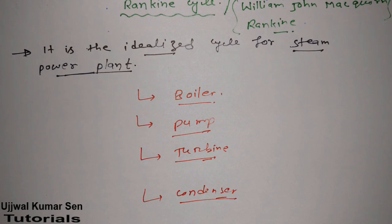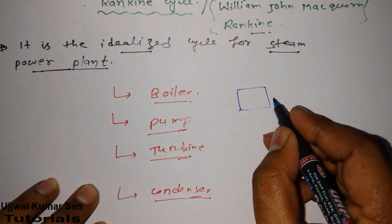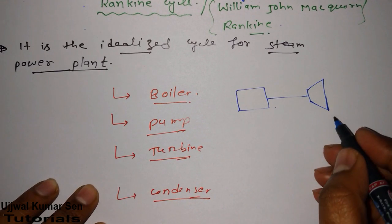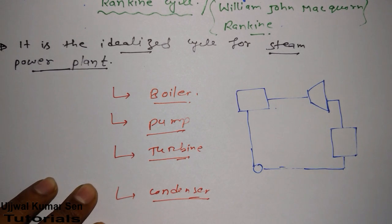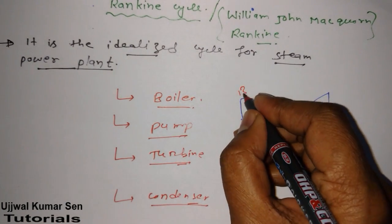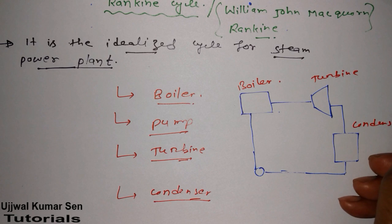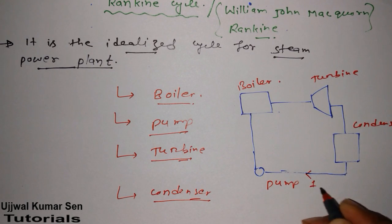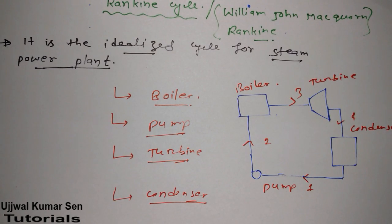We'll draw a diagram showing exactly how this cycle works, and we'll go in depth — including the derivation. Here is the diagram. We have: boiler, turbine, condenser, and pump. Let's label the states one, two, three, four — and then one, two, three, four again, going on in a cyclic process. That's why it is called a cycle, and in this cycle we have four processes.